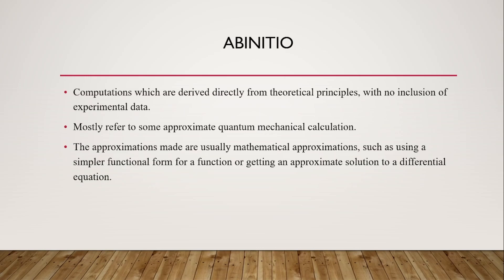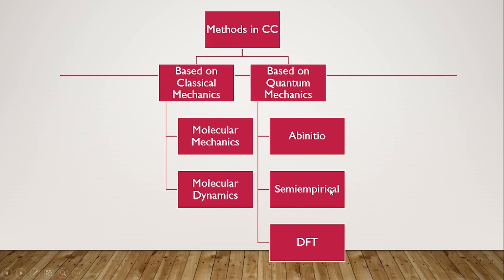Semi-empirical methods are based on some experimental values. Any program running on a semi-empirical platform has a library of integrals already installed. The basic idea is that semi-empirical methods assume some functions and ignore others, making calculations much faster. The assumed or ignored functions may be calculated from the available library of integrals, which contains systems corresponding to different molecular configurations and arrangements.